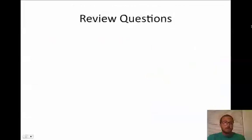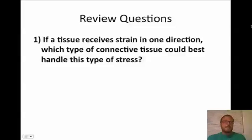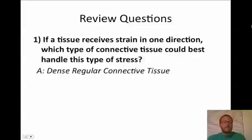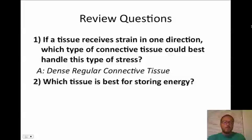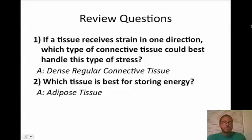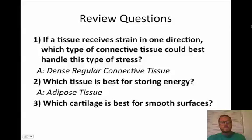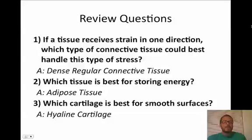Let's do some review questions — pause the video to think about your answer. First: if a tissue receives strain in one direction, which connective tissue best handles this? Answer: dense regular connective tissue, like a tendon or ligament, because the collagen is arranged in parallel. Second: which tissue is best for storing energy? Answer: adipose tissue, since triglyceride is a high-energy molecule. Third: which cartilage is best for smooth surfaces? Answer: hyaline cartilage — very thin fibers, like a Teflon coating at the end of your bones. Make sure you answer the quiz questions, and we'll see you in class.